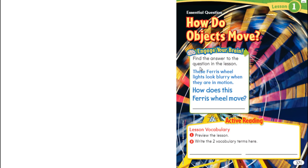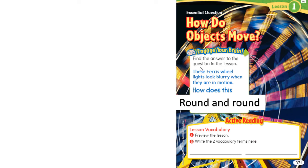Open with me page 371 — how do objects move? Looking at the first wheel, how does it move? What kind of movement does it do? Does it go in a straight line or up and down? No, of course not — it moves round and round. The two vocabulary words for today are motion and speed. Motion is movement when an object is moving.